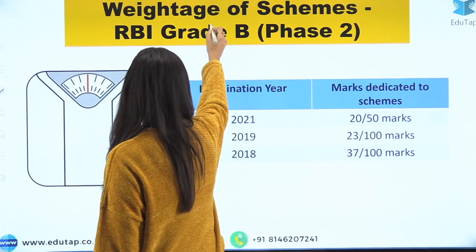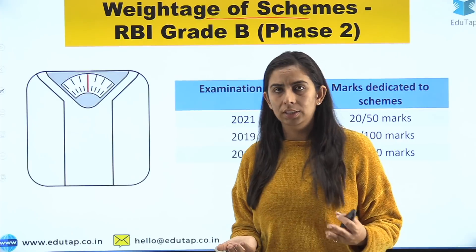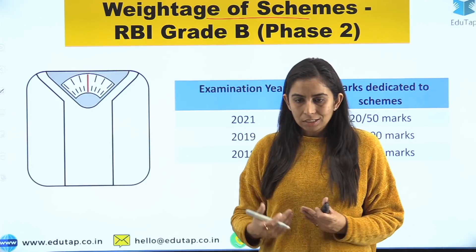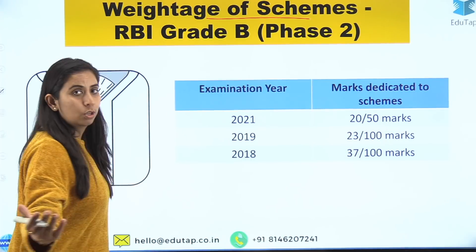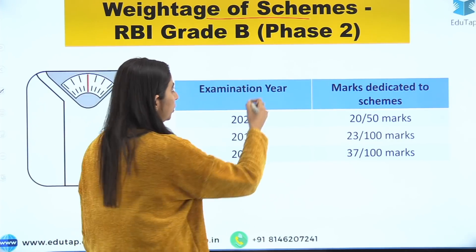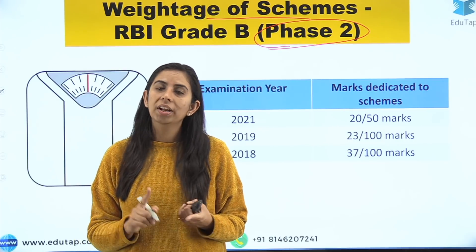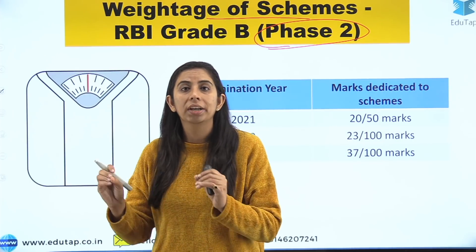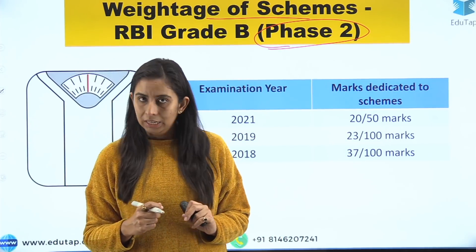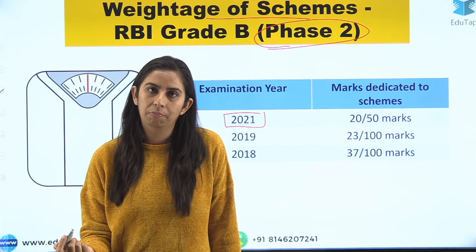First of all, it's very important for you to know the weightage of government schemes. Students who have appeared in this examination earlier know that schemes are important, and those who are new have heard about government schemes a lot. We have done an analysis to provide you this data so you understand the importance. This is a marks analysis for the Phase 2 examination. If you prepare for Phase 2 government schemes, your Phase 1 is already covered — you do not need to do anything separately for Phase 1. We have done a complete analysis of the paper. In Phase 2, 2021, a descriptive paper was introduced, so there was a 50-mark objective paper.